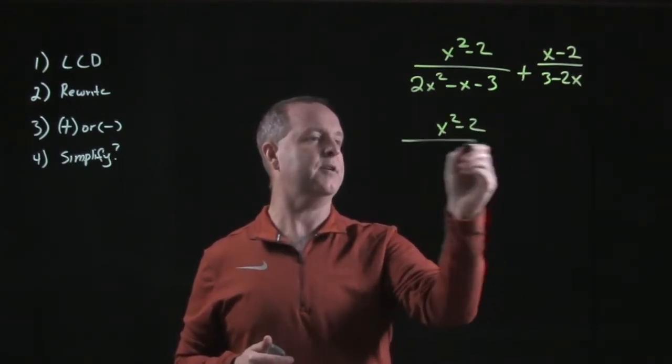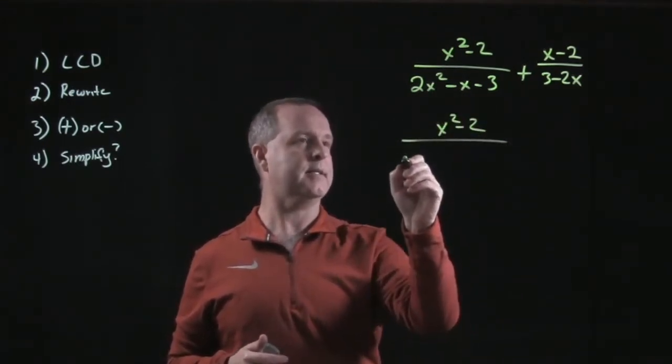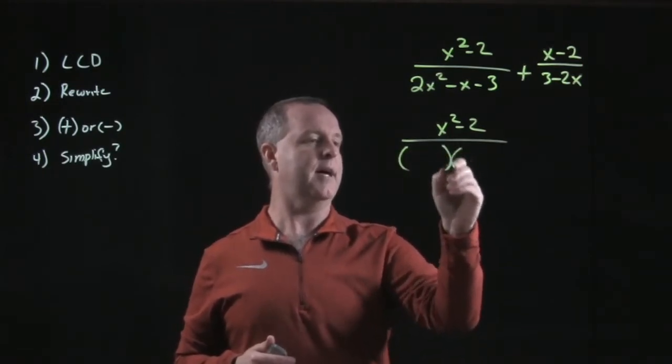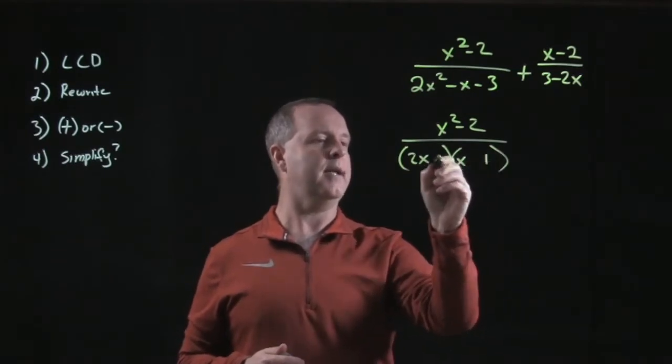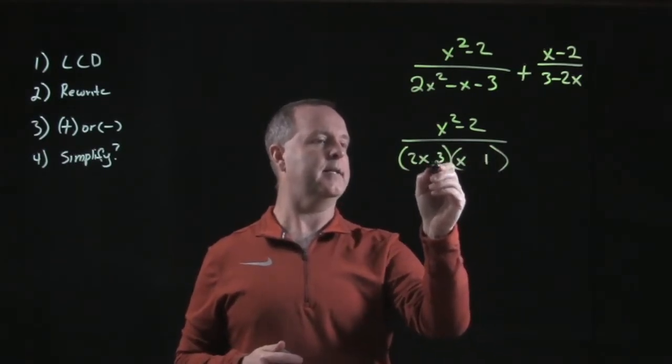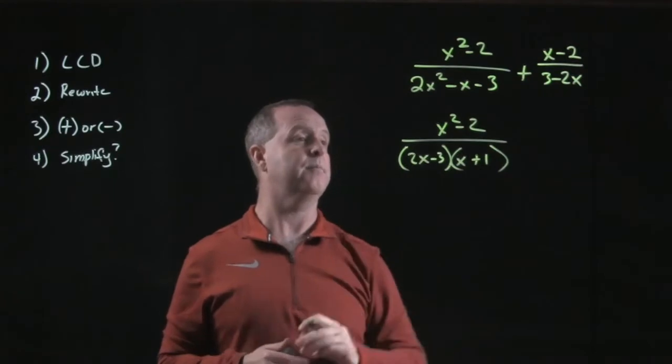I'm going to write x² - 2, which does not factor. 2x² - x - 3 does factor into 2x and x, which factors into 1 and 3. The 3 needs to be negative, the x is positive.